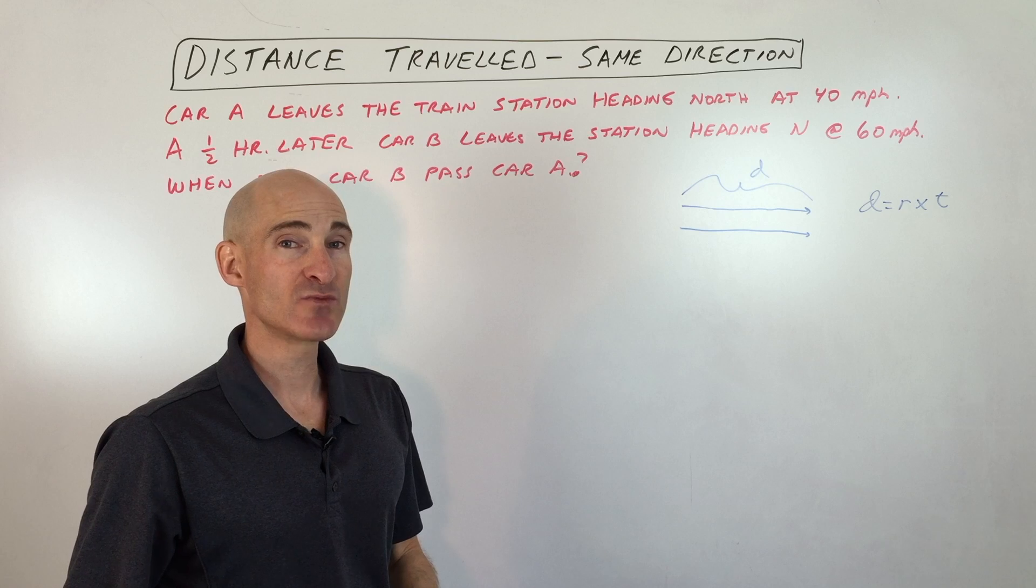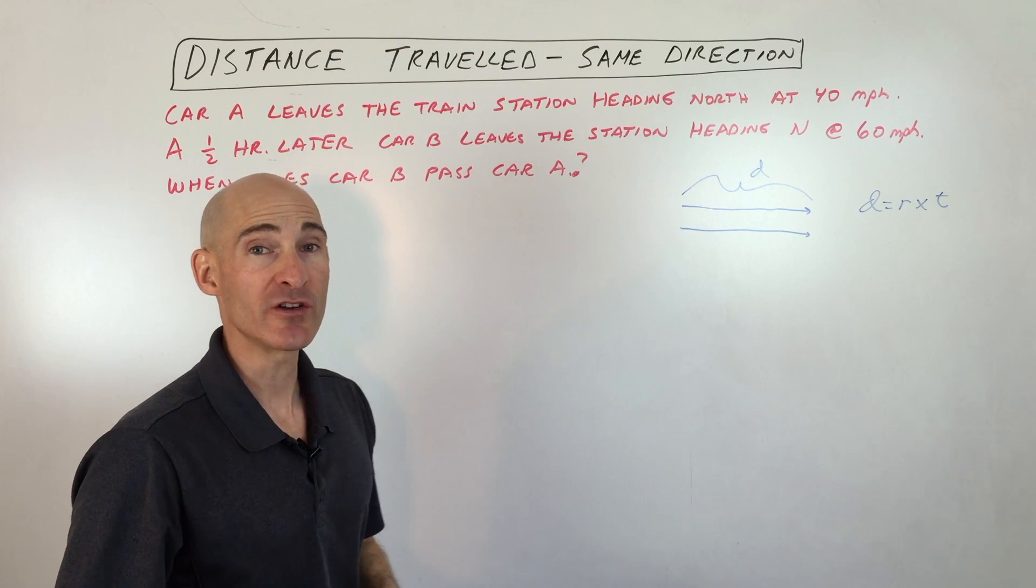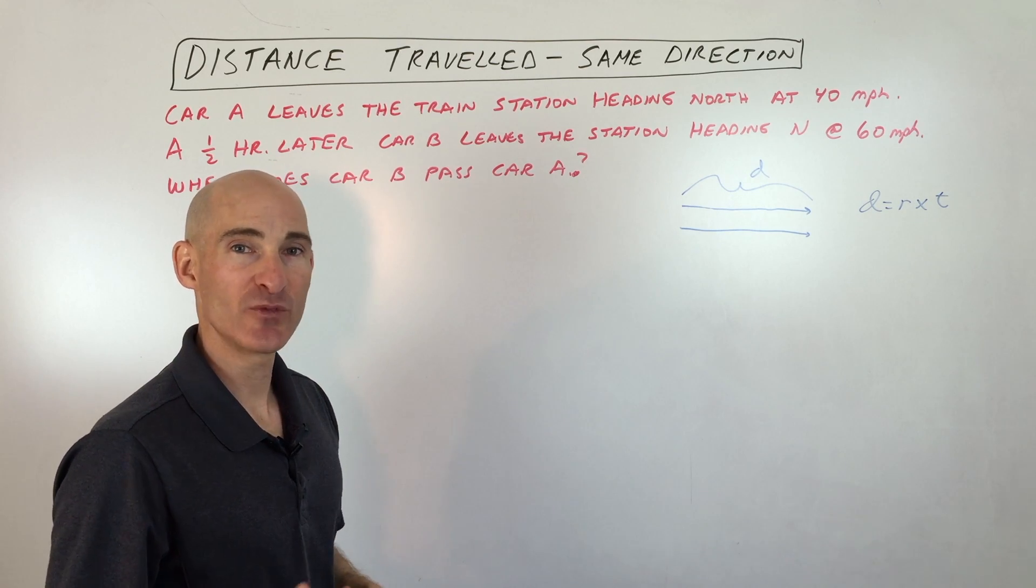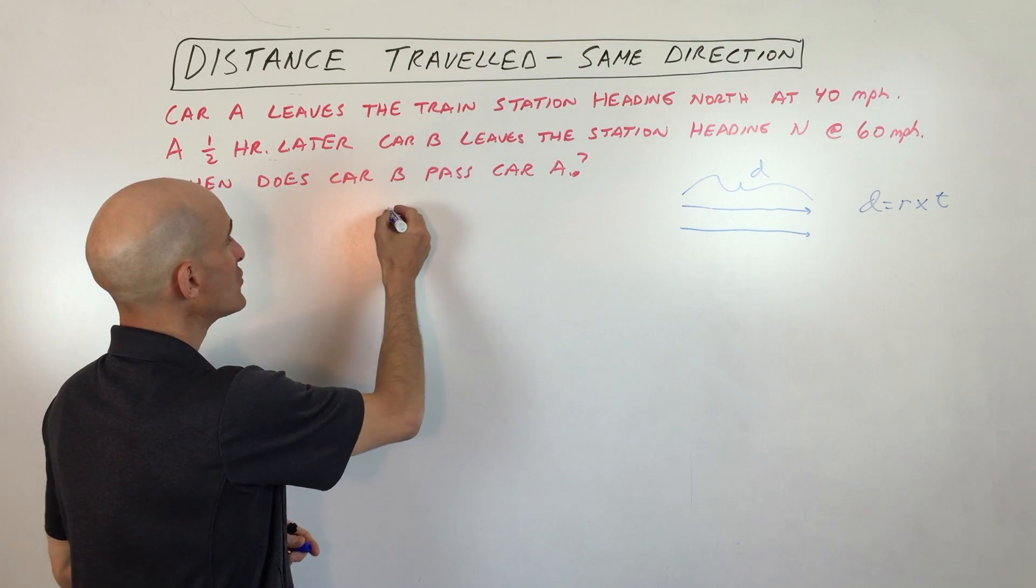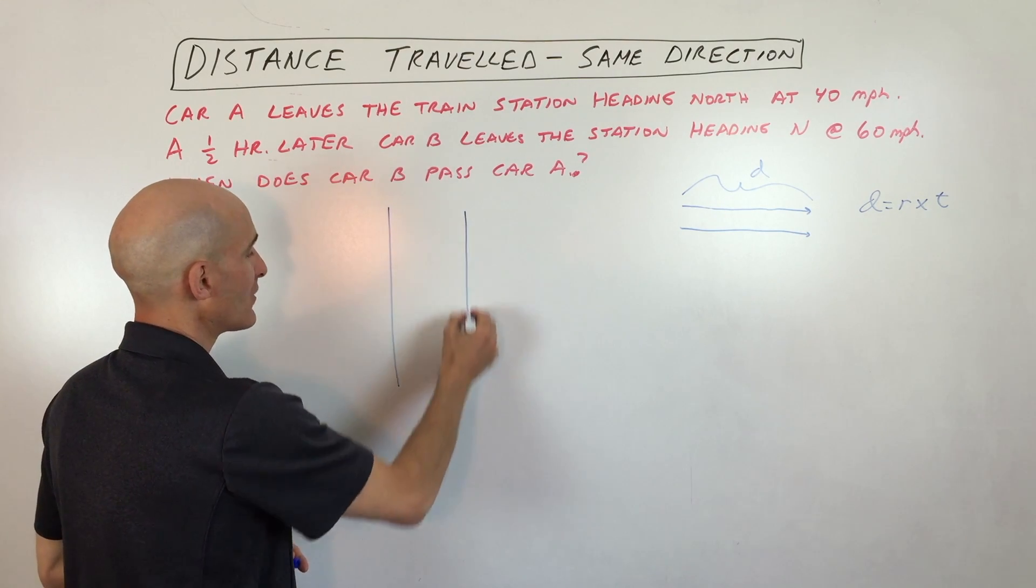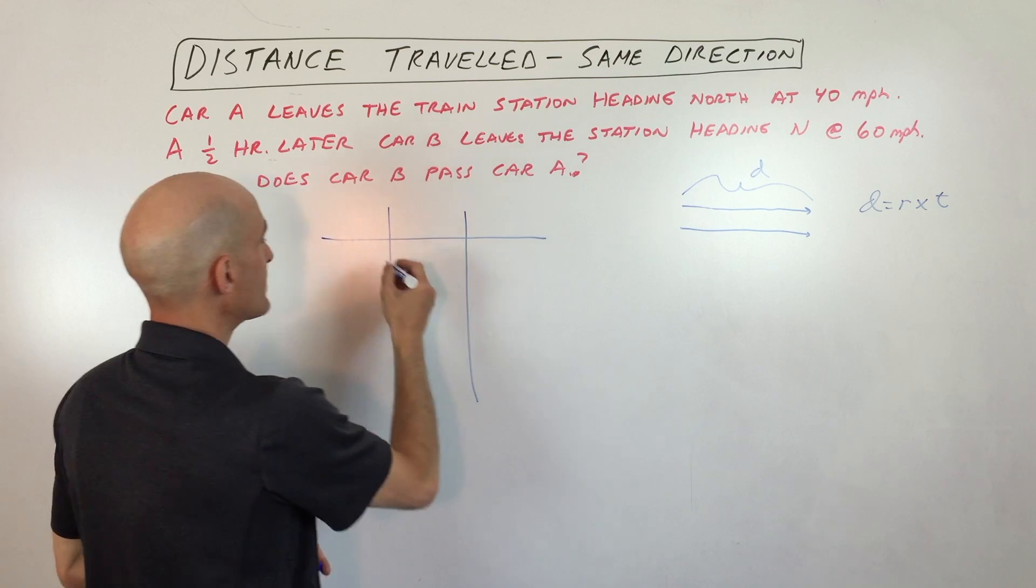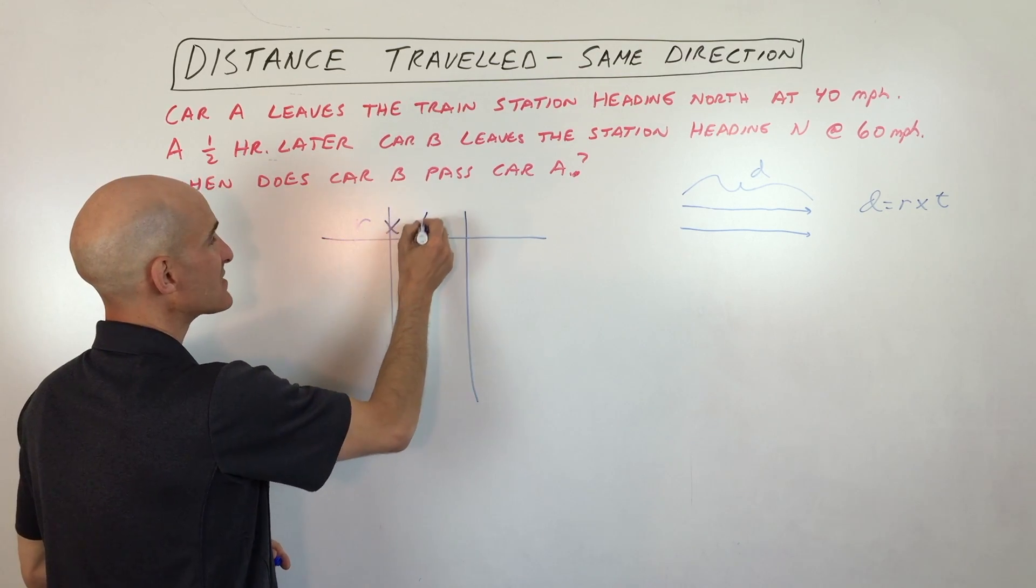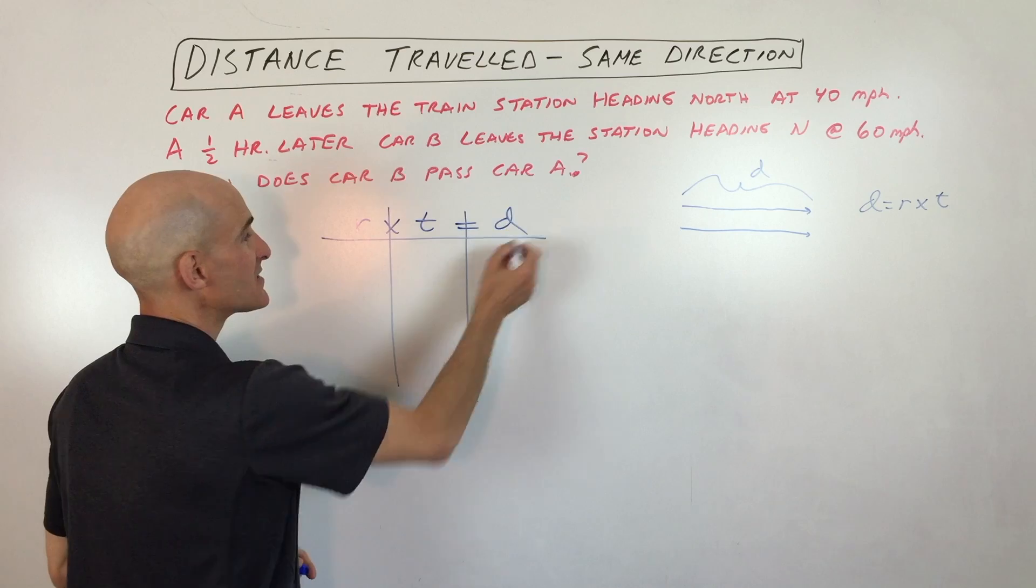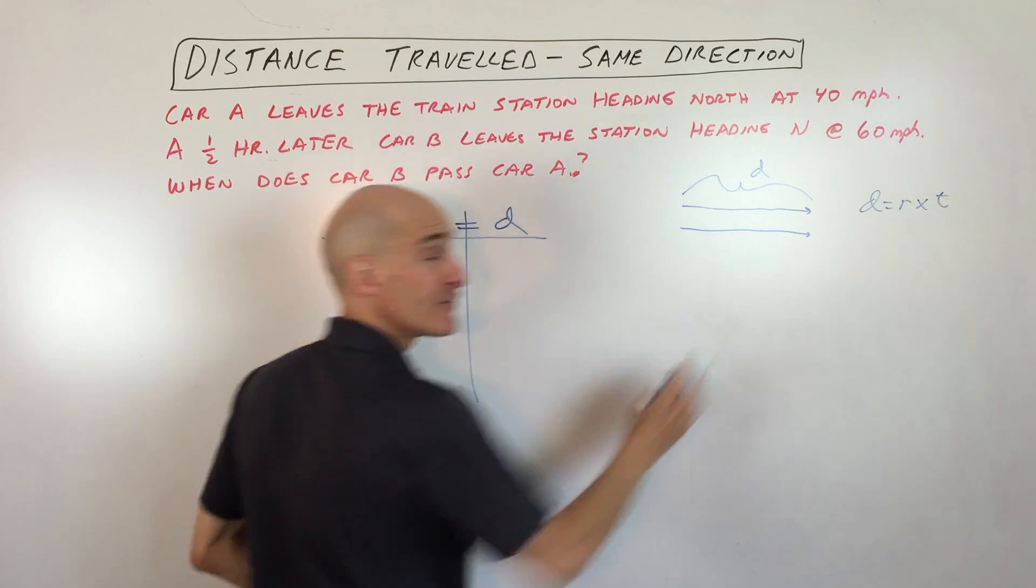Another thing I like to do when I'm doing these problems is I like to make a little chart to help organize the data and help you to write your equations a little bit easier. So what I usually do is I make a little chart. I've got rate times time equals distance. So all I did was take that equation and flip it.